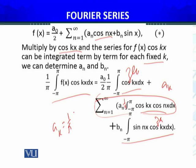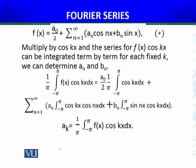So we are left with a_k equals 1 over π times the integral from minus π to π of f(x)cos(kx)dx. This is the expression of a_k.